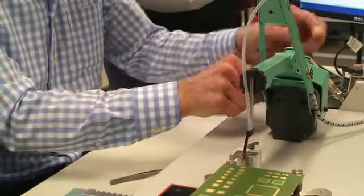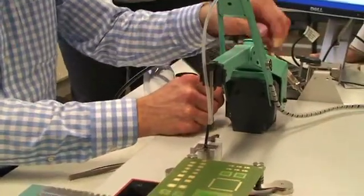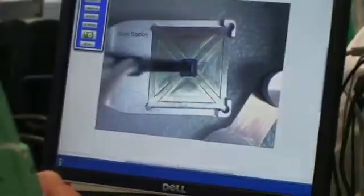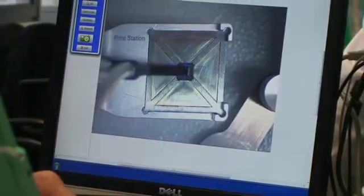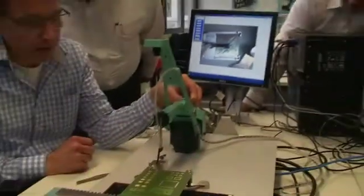I carefully now go down with the arm over the component, switch on the vacuum, and carefully lift up the vacuum and the component out of the stencil. Very carefully.